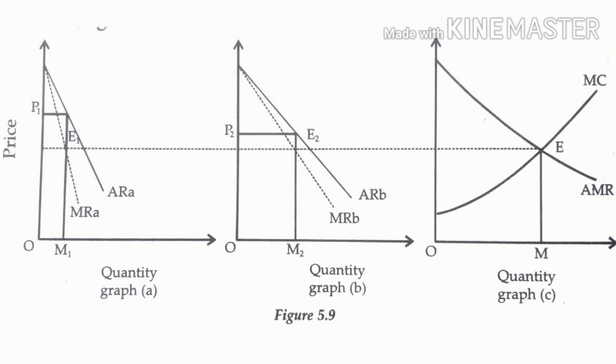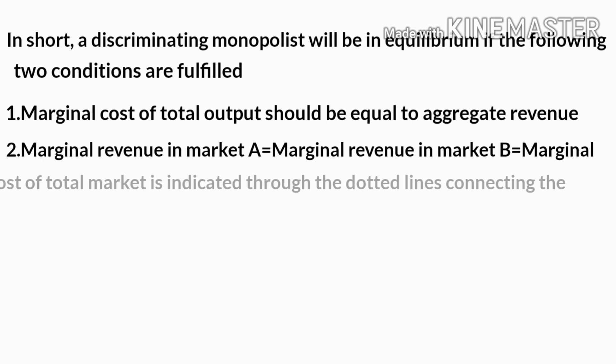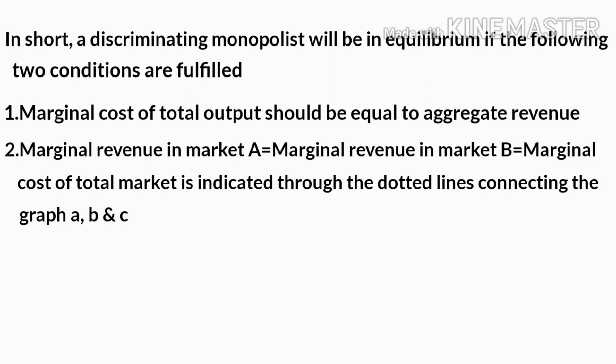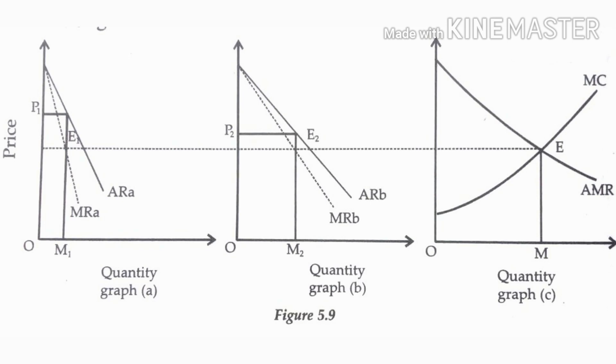In short, a discriminating monopolist will be in equilibrium if the following two conditions are fulfilled. First condition: marginal cost of total output should be equal to aggregate marginal revenue. Second condition: marginal revenue in market A equals marginal revenue in market B equals the marginal cost of the total market. This is indicated through a dotted line connecting all three graphs, giving us the graphical representation of price discrimination.